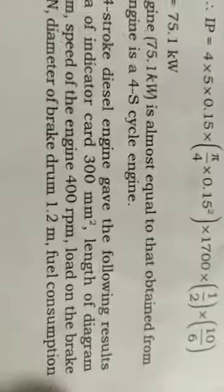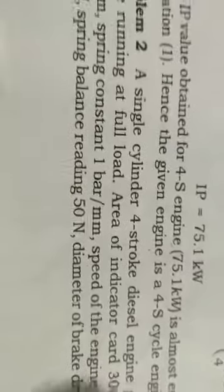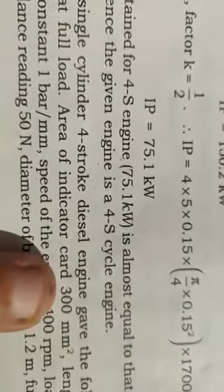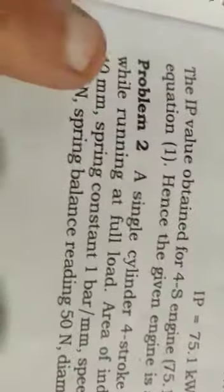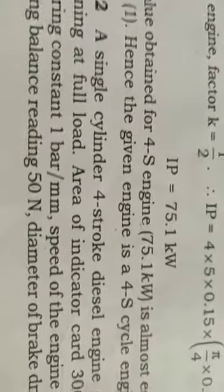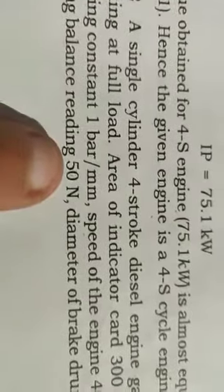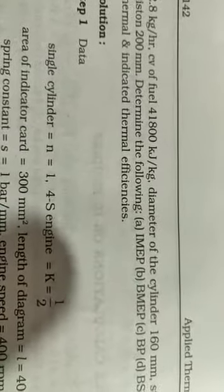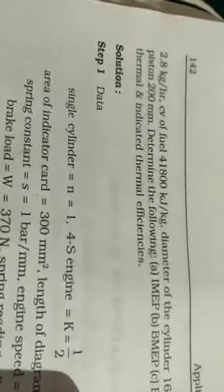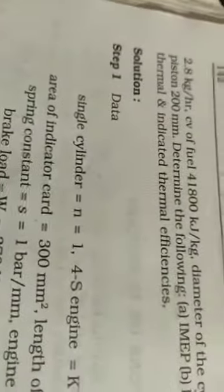A single cylinder 4-stroke diesel engine gave the following results while running at full load. Area of indicator diagram: 300 mm square; length of diagram: 40 mm; spring constant: 1 bar per mm; speed of the engine: 400 rpm; load on the brake: 370 newtons; spring balance reading: 50 newtons; diameter of brake drum: 1.2 meter; fuel consumption: 2.8 kg per hour; calorific value of fuel: 41,800 kJ per kg; diameter of the cylinder: 160 mm; stroke of the piston: 200 mm. Determine the following: indicated mean effective pressure, brake mean effective pressure, brake power, brake specific fuel consumption, brake thermal and indicated thermal efficiency.